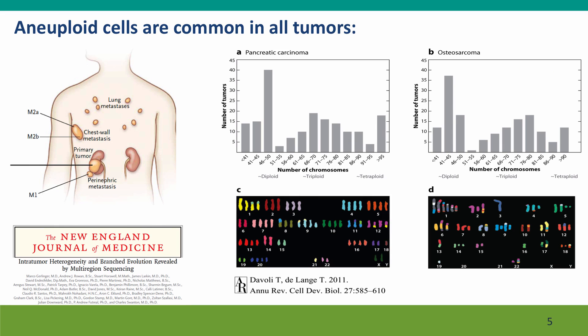Aneuploid cells are very common in our normal tissues, but they're even more common in tumors. You'll recall when we described this analysis of kidney cancer genomes that many, many cells were aneuploid — many different kinds of aneuploidies. Here's a figure I showed you in a previous lecture of the karyotypes of two tumor cells from a pancreatic carcinoma and an osteosarcoma, a bone cancer. When I showed you them the first time, I was emphasizing the number of chromosomes that were tetraploid, suggesting that these cancers might have arisen by an initial event that made the cells tetraploid.